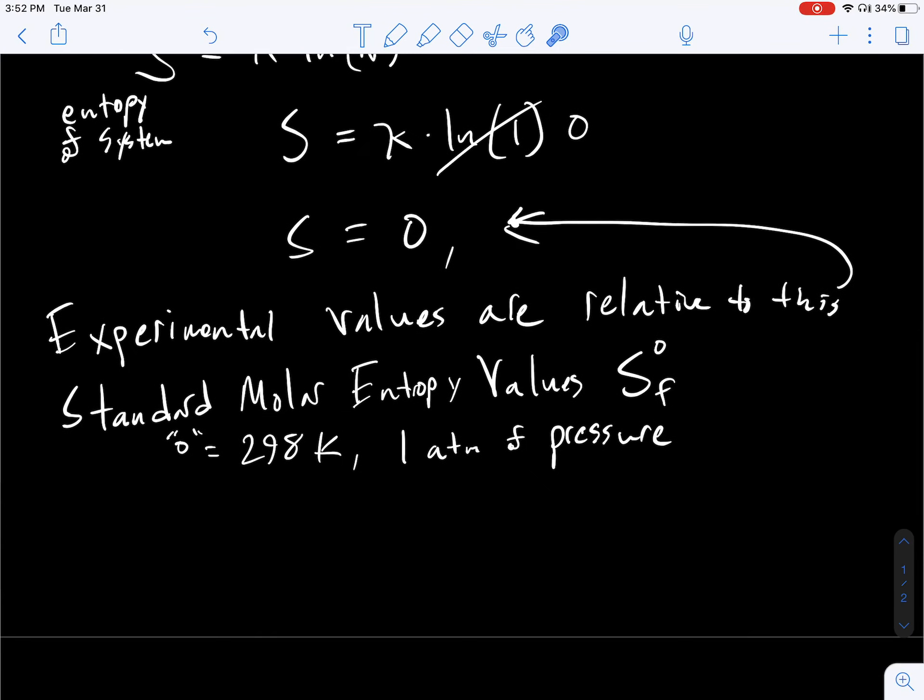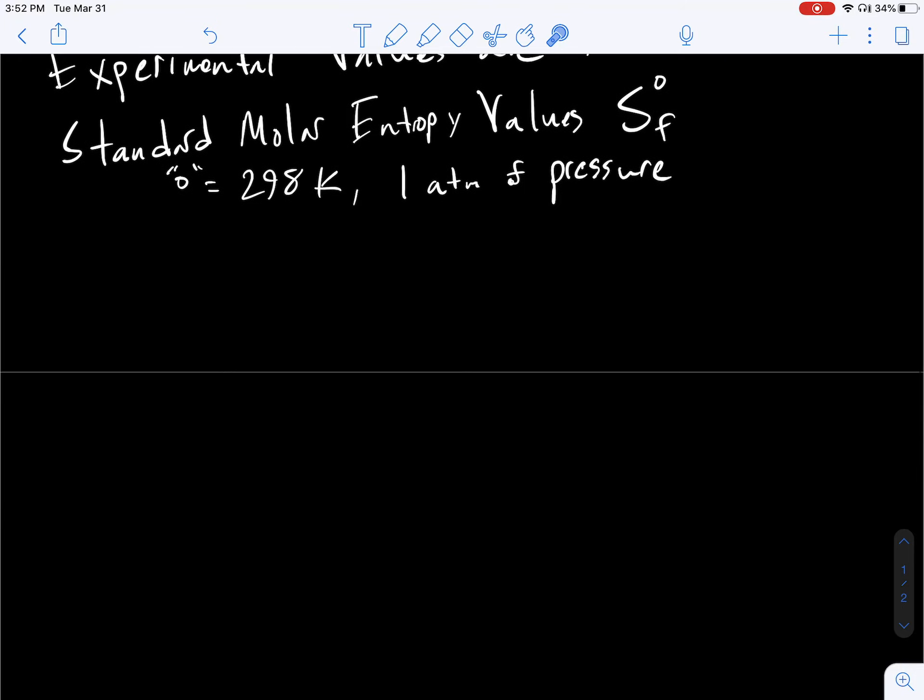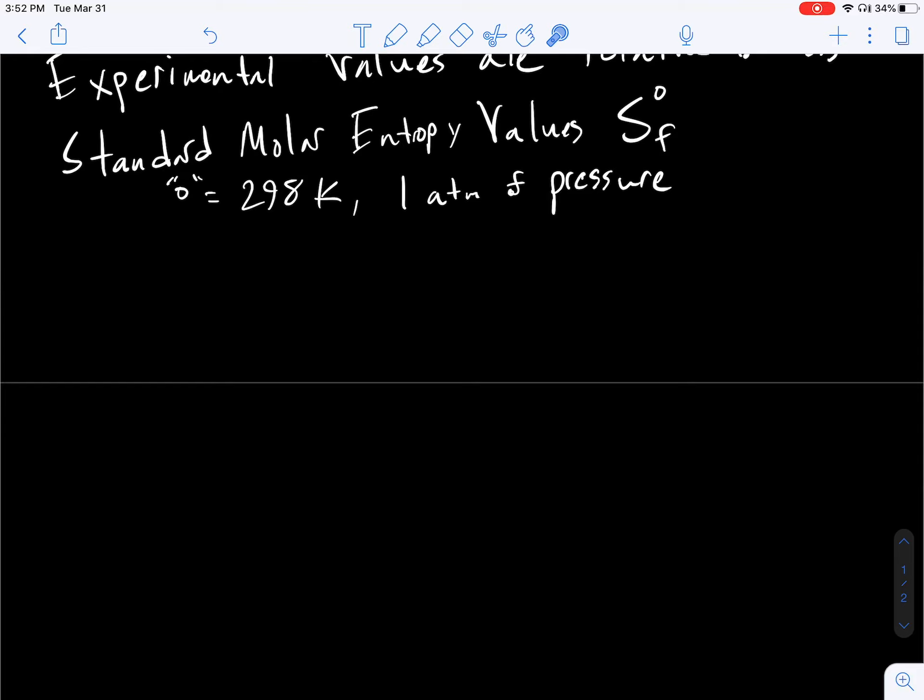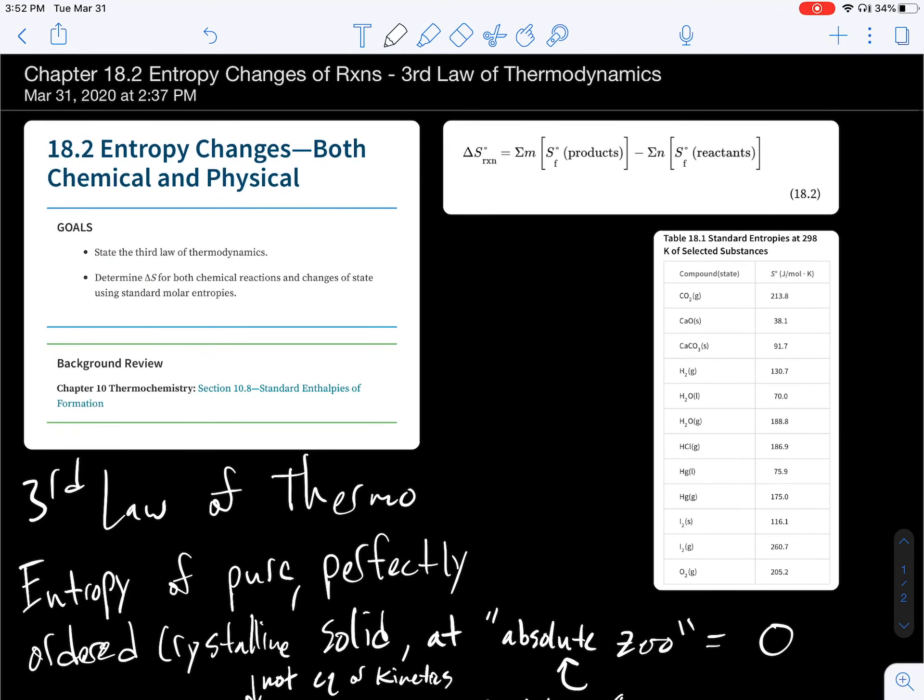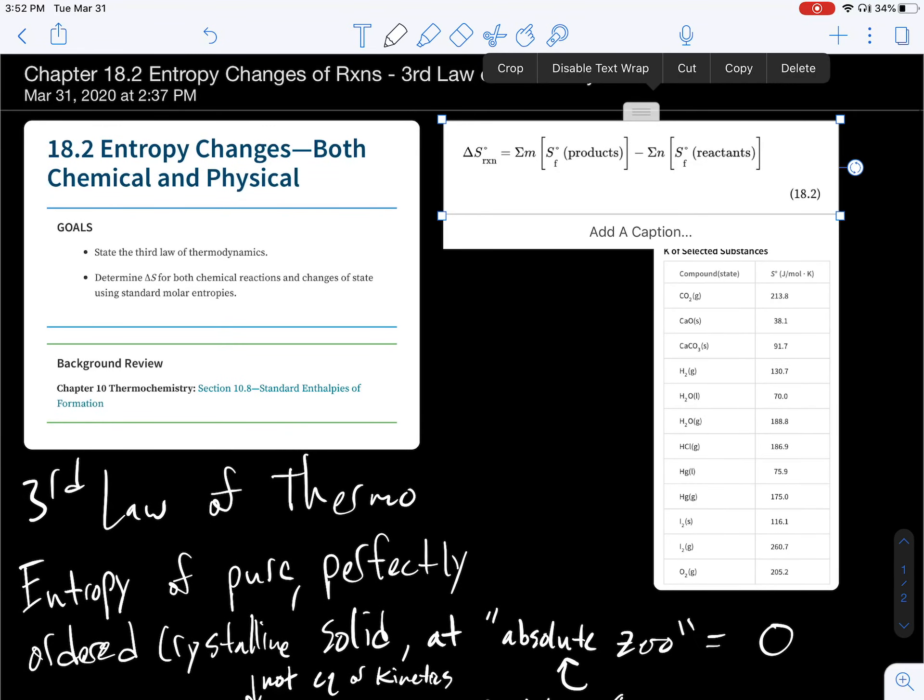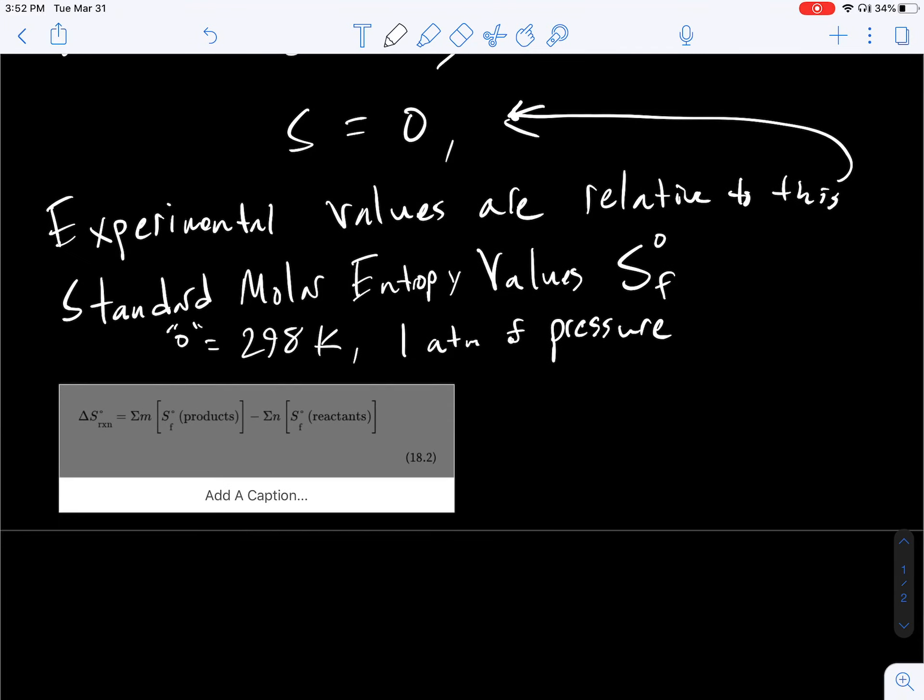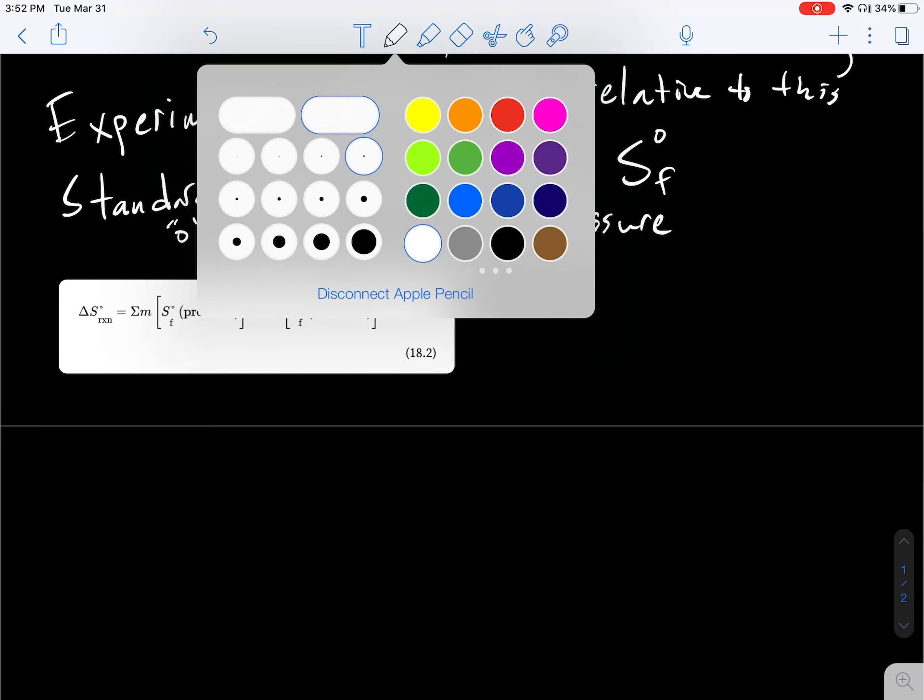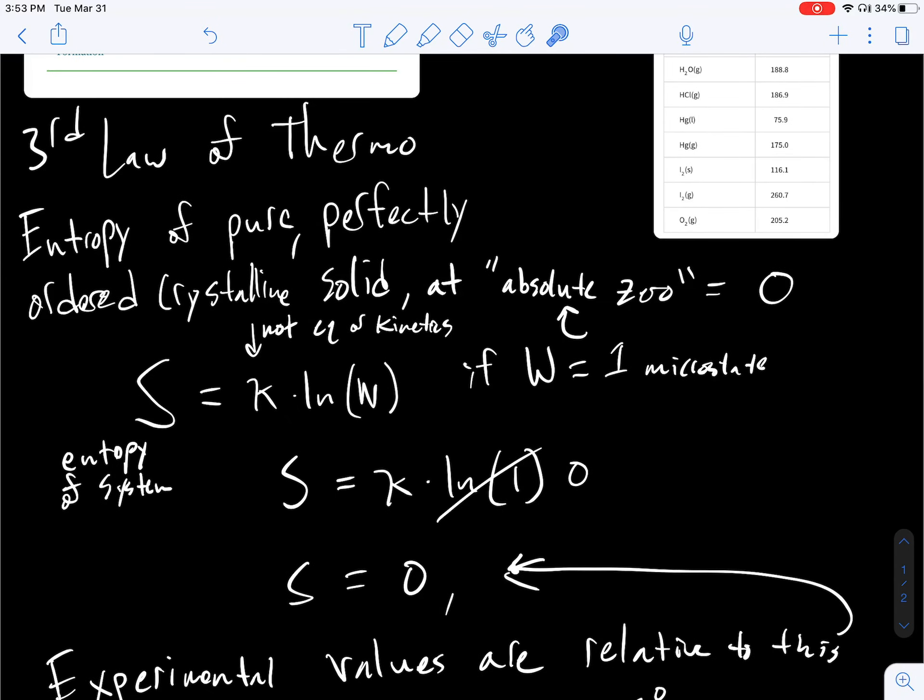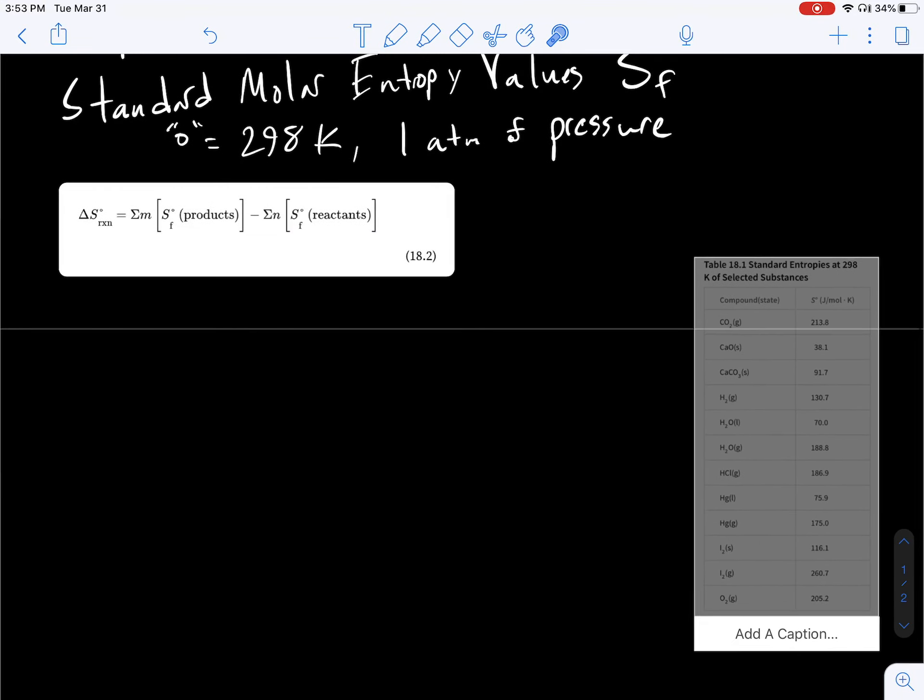So we are going to use this equation here. So how do we find the actual delta S of a reaction? Well, we just need two things. We need the standard entropy values of the products, the sum of all of them times their molar coefficients, minus the sum of all the delta S values of the reactants that we can look up in a table.